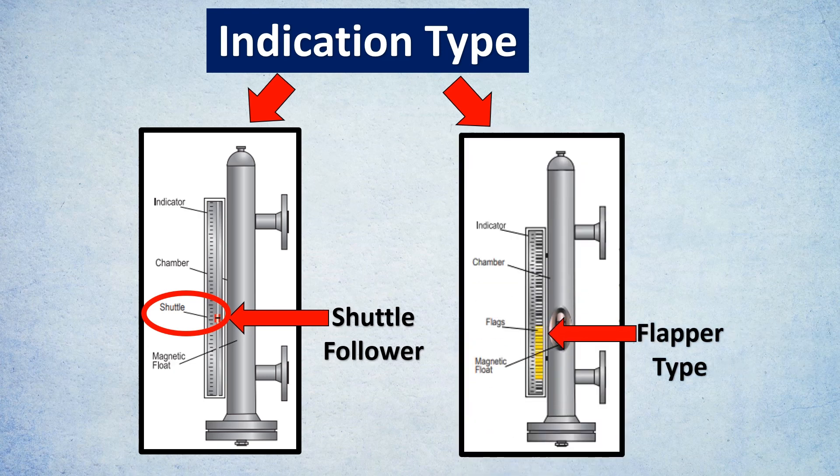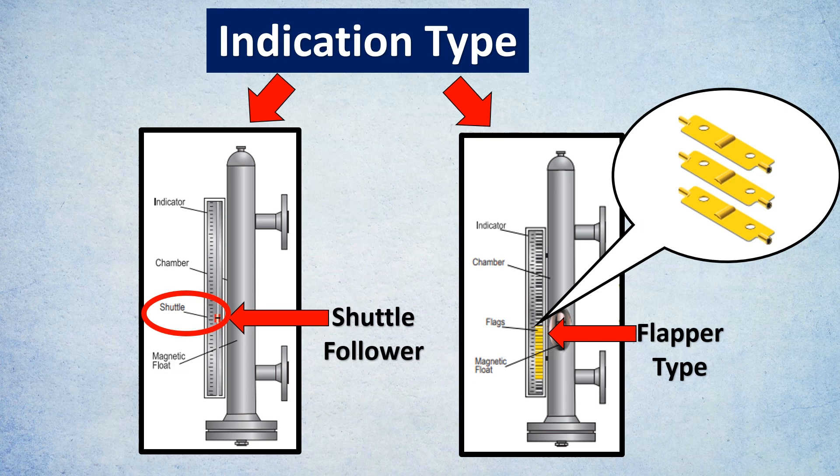The second type of indication available is flapper type. If you notice here, there are these yellow flaps which keep changing the color depending on your project applications. As the level rises, you will see this change in color happening. This is the more recommended one because it has high visibility, but it depends on project to project basis.